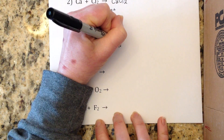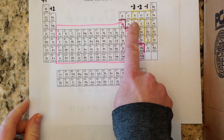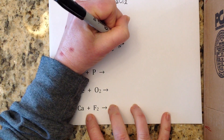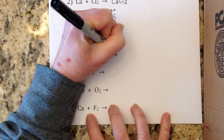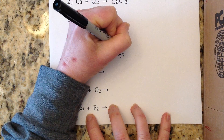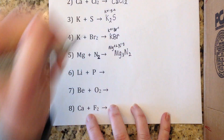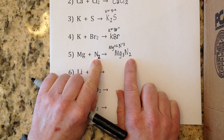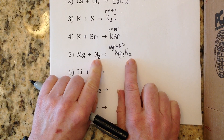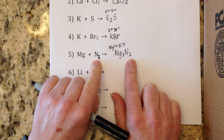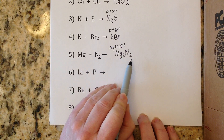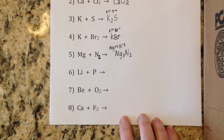Nitride is N³⁻ — nitrogen is in the negative-three column of the periodic table. When you crisscross magnesium plus two with nitride minus three, you get Mg₃N₂. Again, the subscript 2 on N₂ in the reactants is not the same as the subscript 2 in Mg₃N₂. The first 2 is there because nitrogen is a diatomic gas; the second 2 is a result of the crisscrossing.